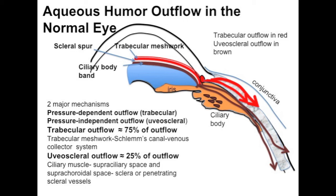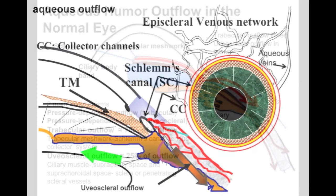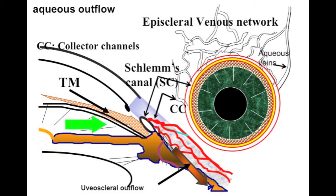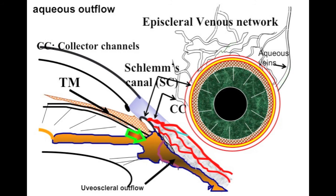Approximately 70% to 75% of aqueous outflow is through the trabecular-Schlemm's canal route, and the rest through the uveoscleral route. Aqueous typically travels from the posterior chamber, through the pupil, into the anterior chamber, through the trabecular meshwork, into Schlemm's canal, and out the collectors and the venous plexus and the episcleral route. The uveoscleral route is through the uveal tract and out the sclera and its emissary.